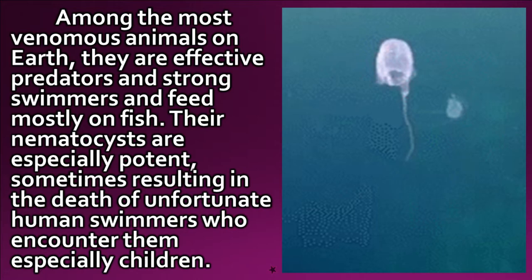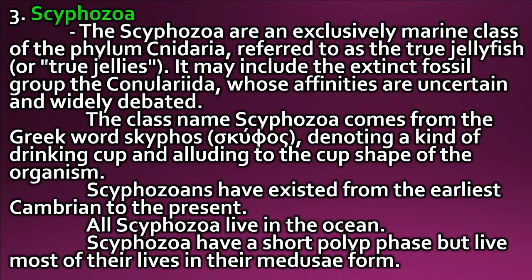Scyphozoa are an exclusively marine class of the phylum Cnidaria, referred to as the true jellyfish or true jellies. It may include the extinct fossil group the Conulariida, whose affinities are uncertain and widely debated. The class name Scyphozoa comes from the Greek word 'scyphos', denoting a kind of drinking cup, alluding to the cup shape of the organism. Scyphozoans have existed from the earliest Cambrian to the present. All Scyphozoa live in the ocean.